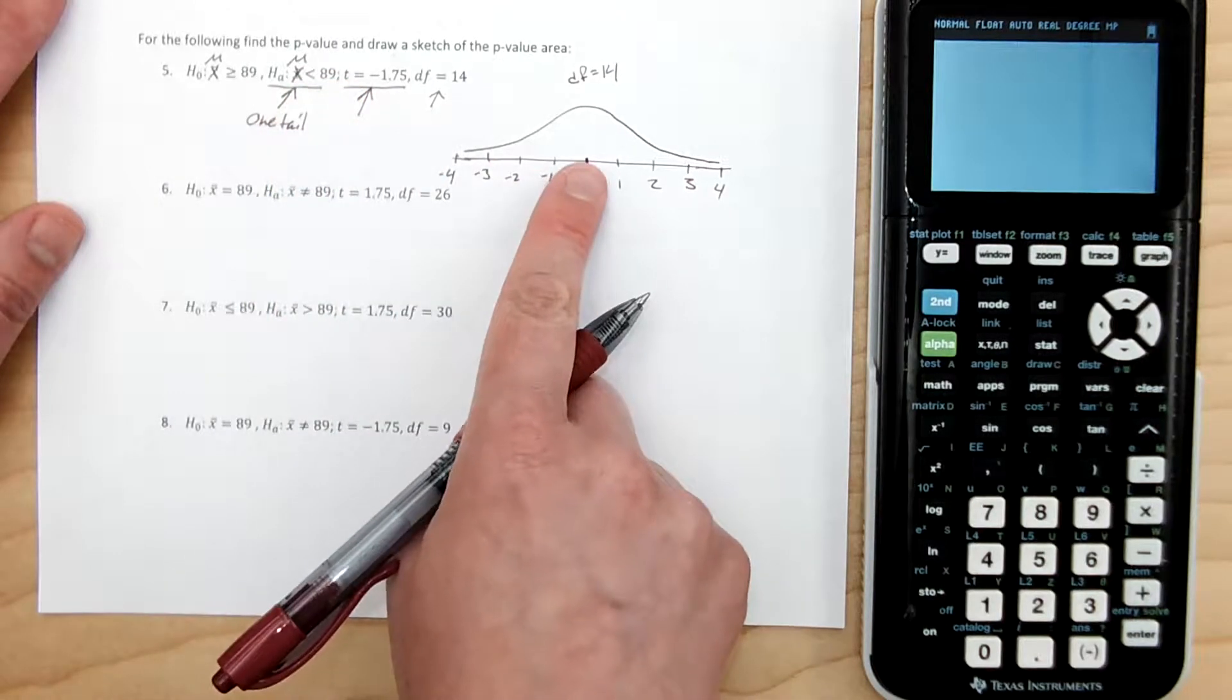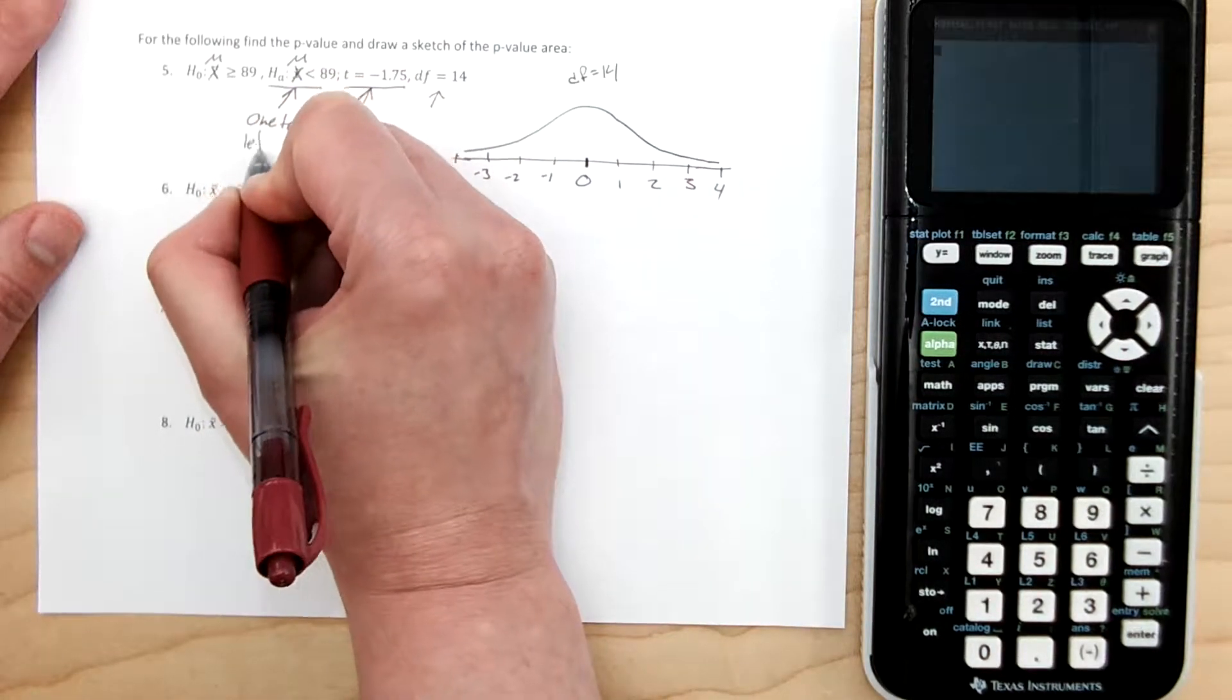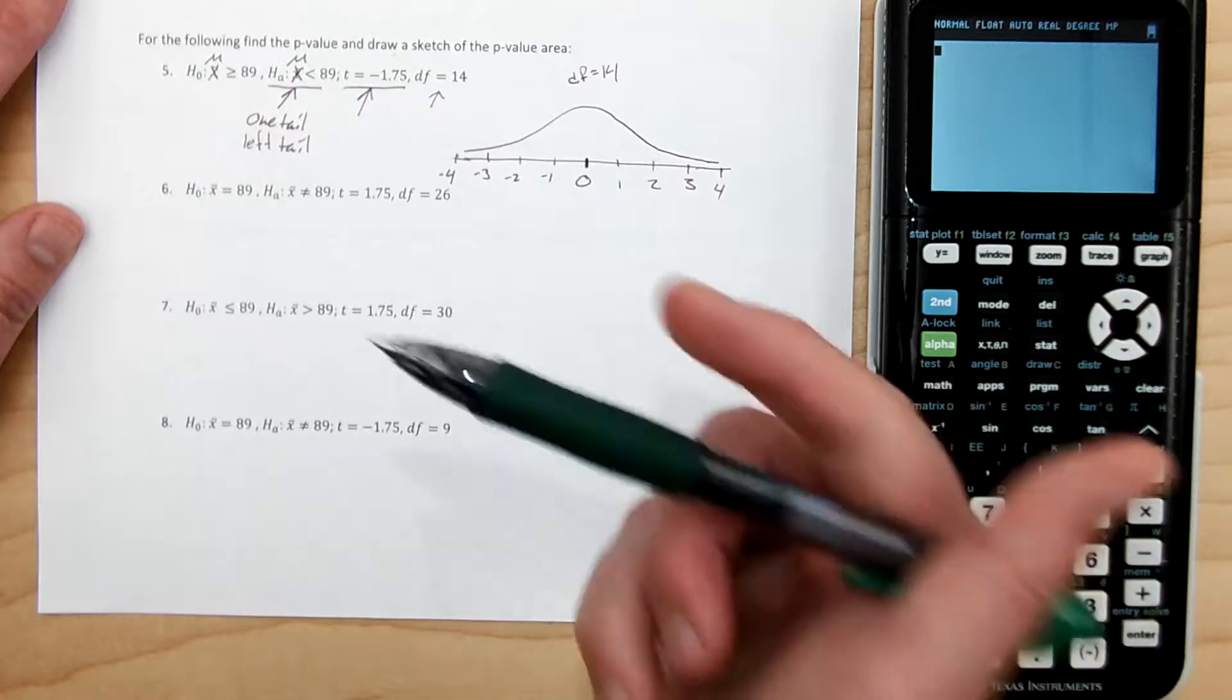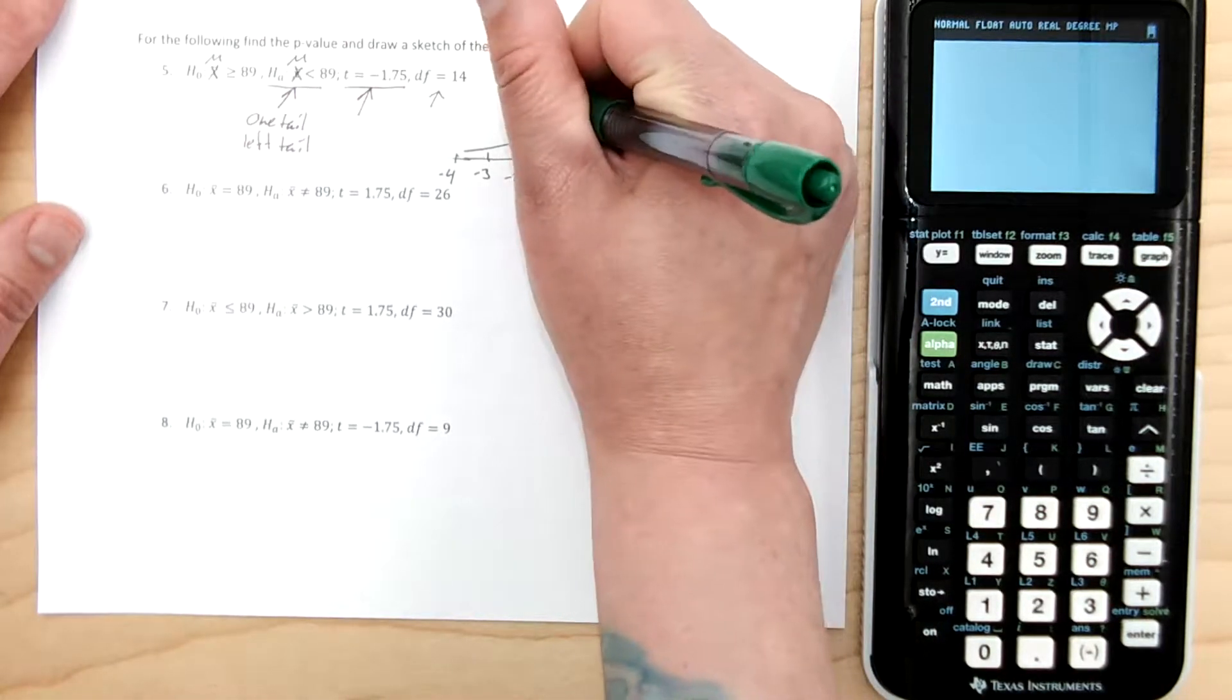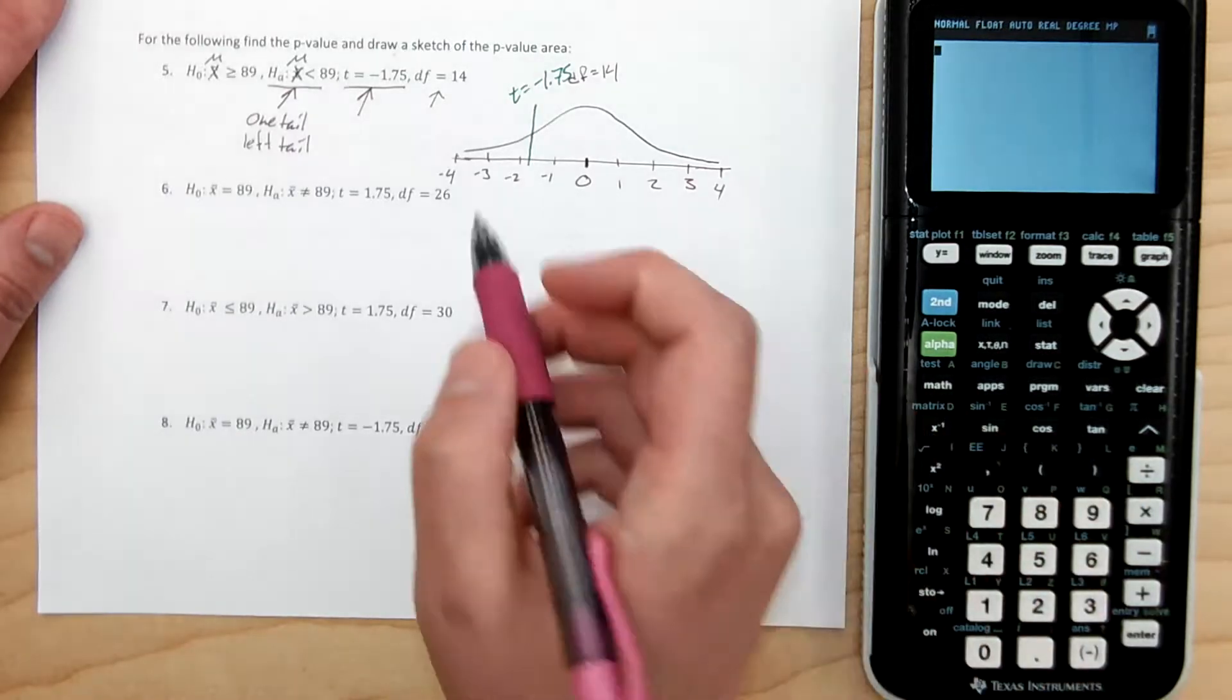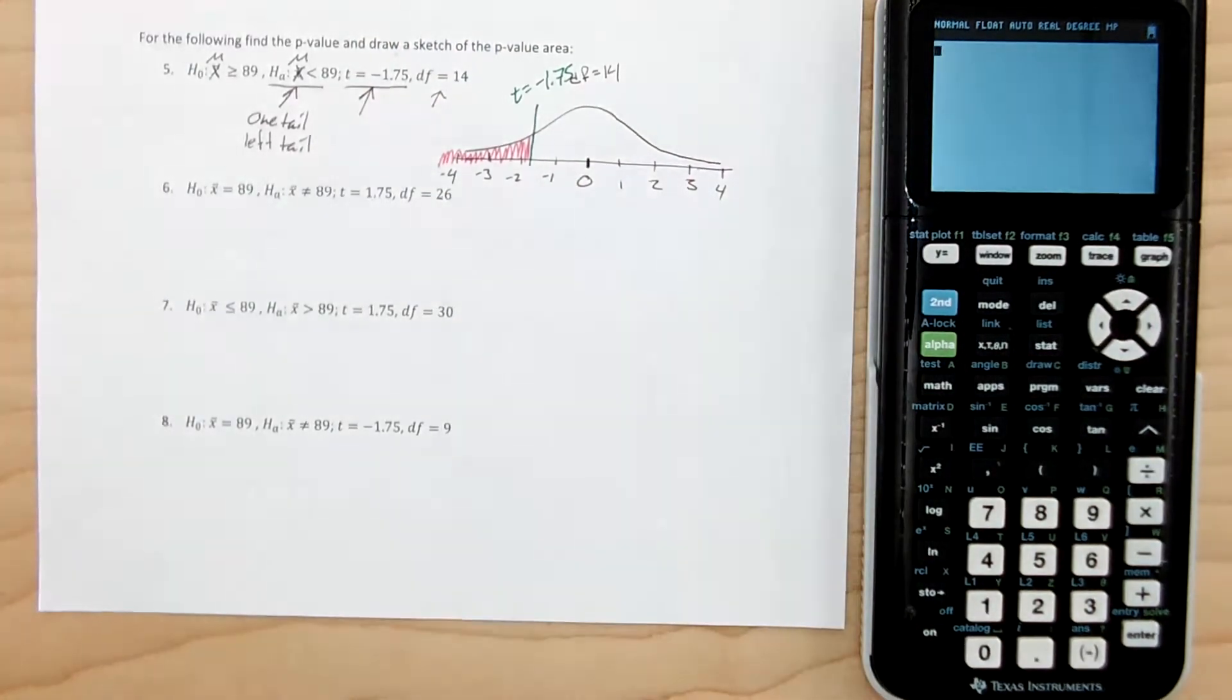It's a one-tail, and since we're saying, we're hypothesizing that it's less than, that means that we know we want to go in this direction, so this is a left-tail. All right, so we're going to plot our negative 1.75, so that's about here. So T is negative 1.75, and now we're going to fill in that area.